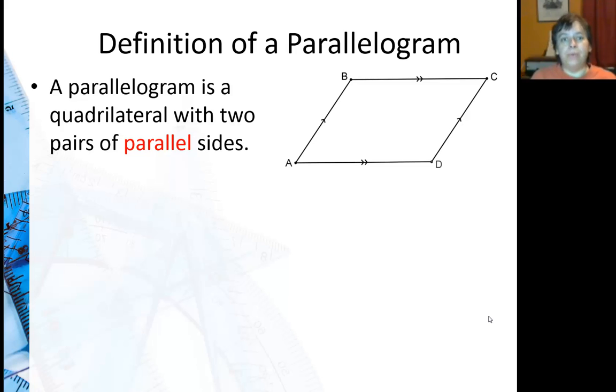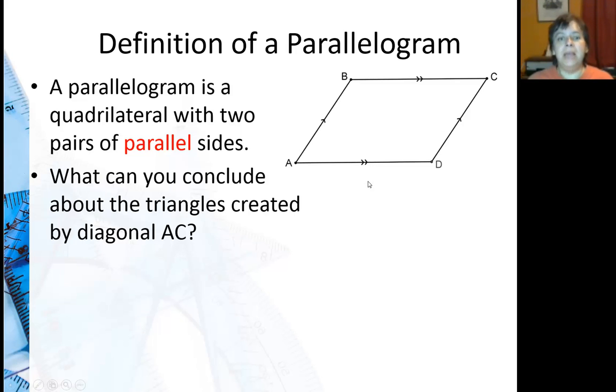It is a quadrilateral with two pairs of parallel sides, and you can see here's the parallel marks on AB and CD, and BC and AD.